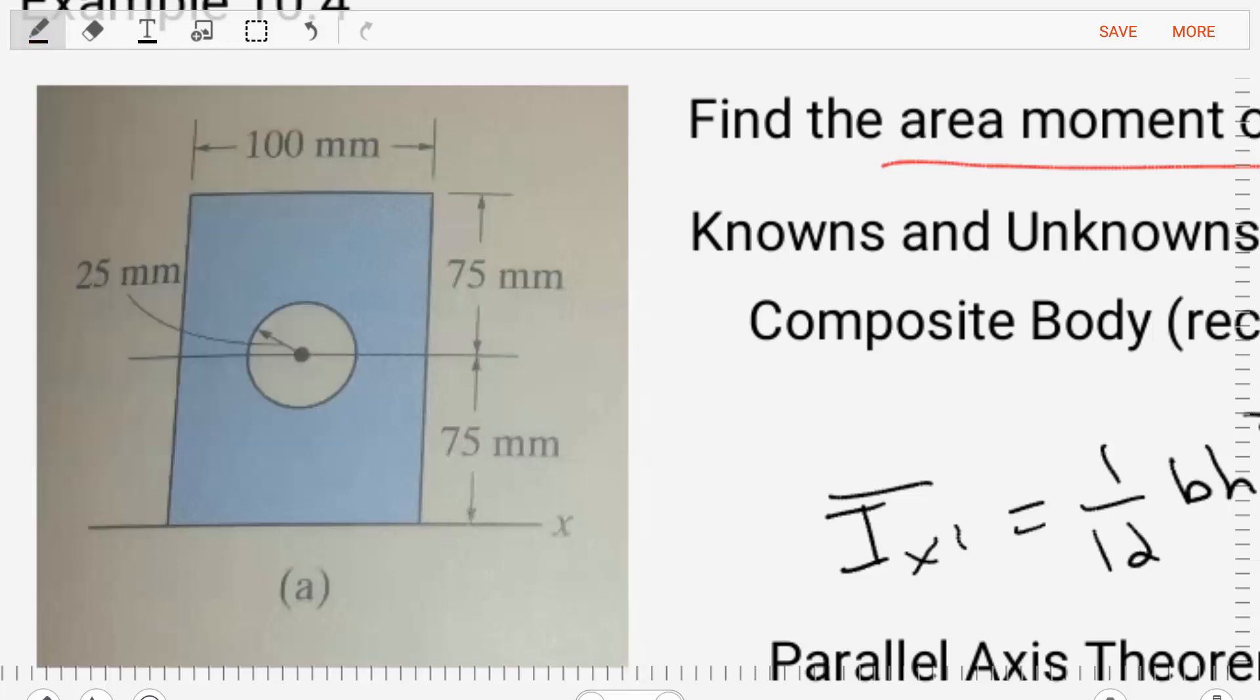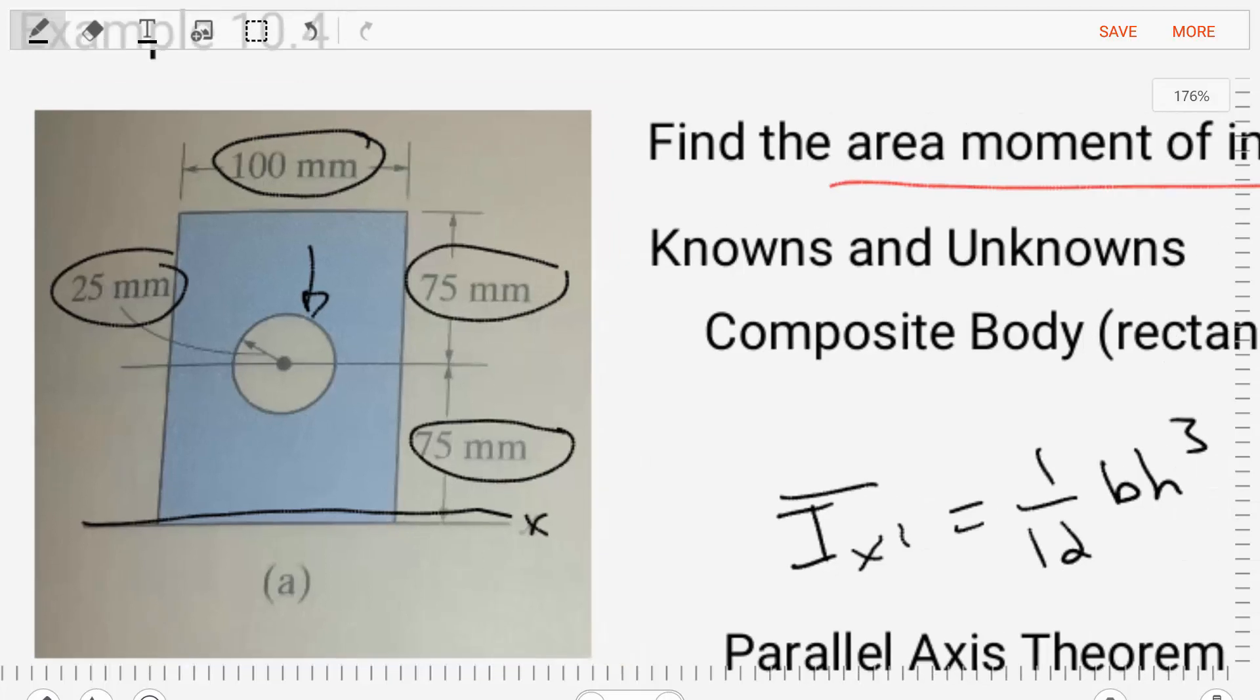We see in this area, we're given that the x-axis is at the bottom of the area. We're given the dimensions, and we also can see that there is a hole within the area that we're given. There is an empty circular hole in the middle of this structure.